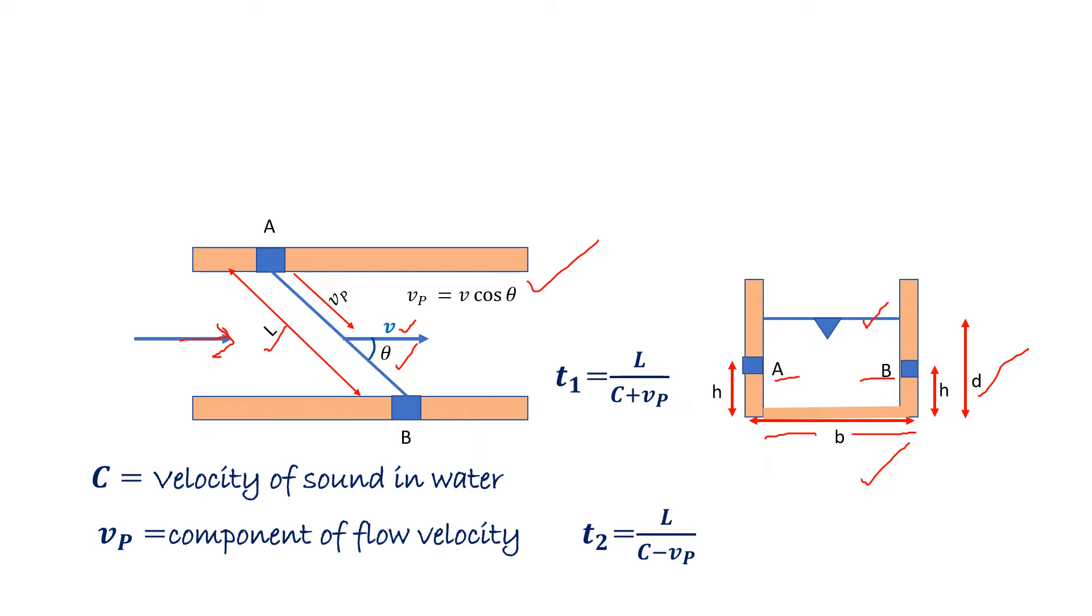So let's suppose transducer A sends a signal and it is getting received by transducer B in time T1. So T1 can be written as L divided by C plus Vp. Here C is velocity of sound in water and Vp is flow velocity component.